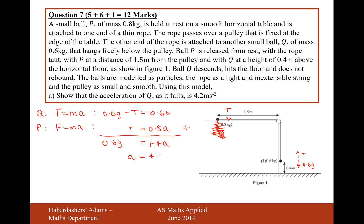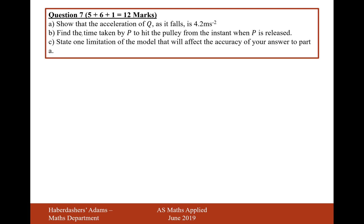So a equals 4.2. Lovely, good stuff. So there we are, a equals 4.2 metres per second squared. Let's now move on to part B. Find the time taken by P to hit the pulley from the instant when P is released.